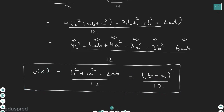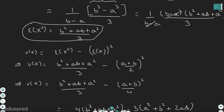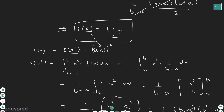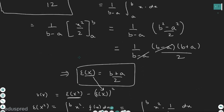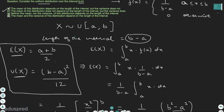Clearly, the variance of X depends on the length of the interval. So once again, the answer to this question is part B, which says the mean of the distribution does not depend on the length of the interval, but the variance of the distribution does depend on the length of the interval.